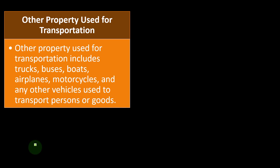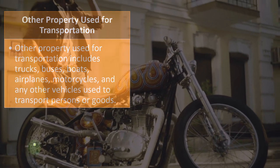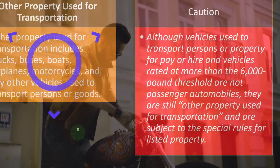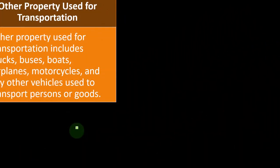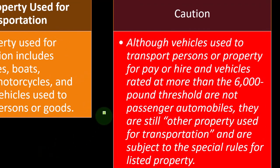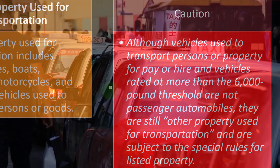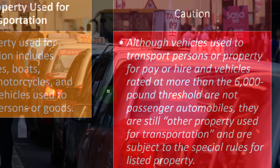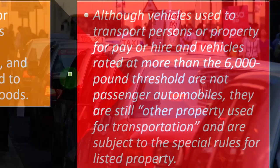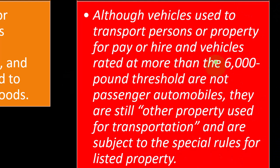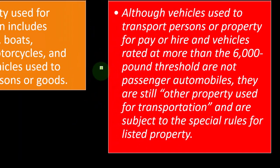Other property used for transportation includes trucks, buses, boats, airplanes, motorcycles, and any other vehicle used to transport persons or goods. Caution: although vehicles used to transport persons or property for pay or hire, and vehicles rated at more than the 6,000-pound threshold, are not passenger automobiles, they are still 'other property used for transportation' and are subject to the special rules for listed property. So you've got to be careful — it can still be listed property.